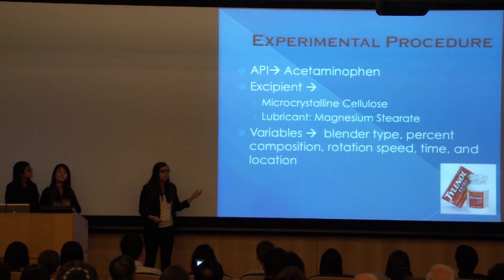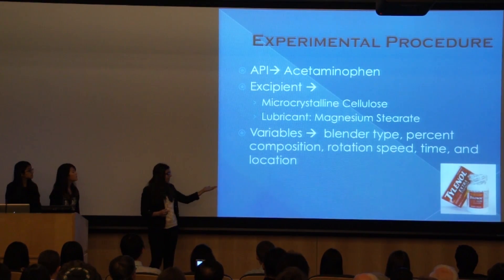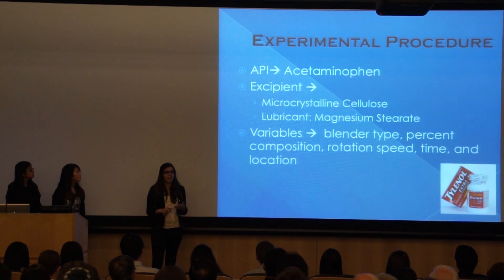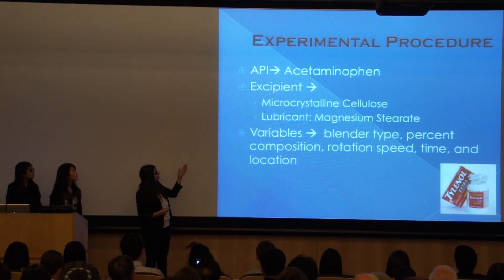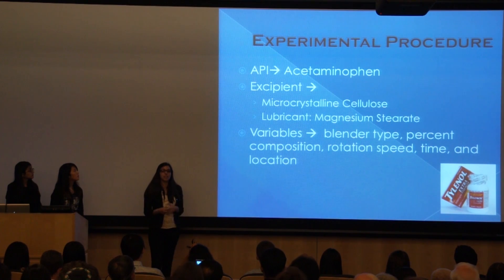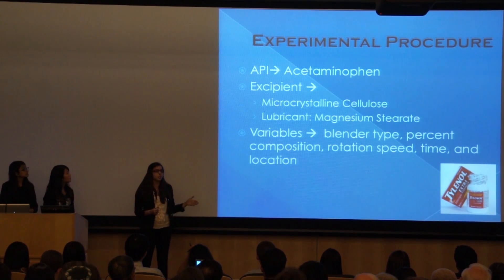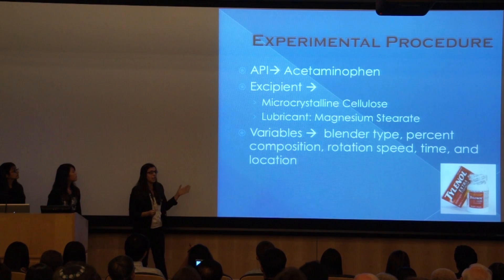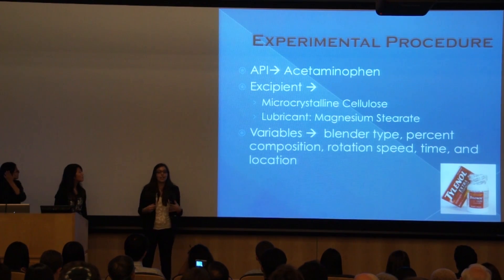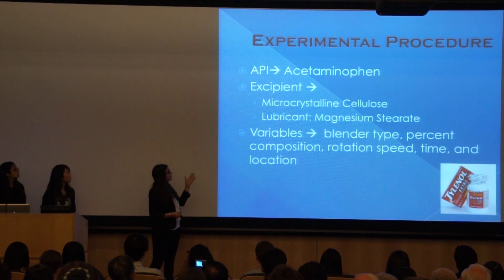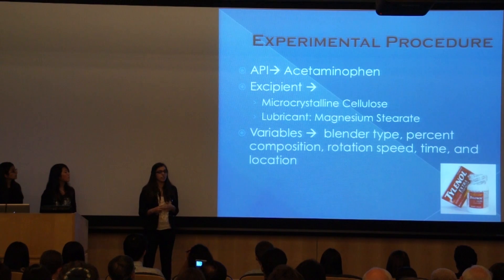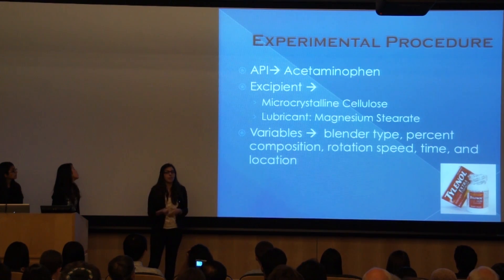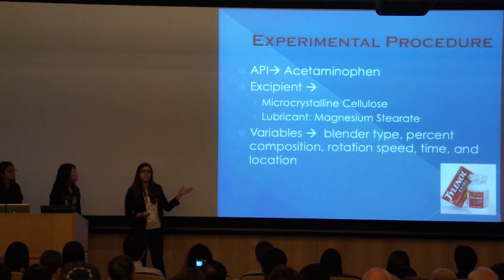In our experiment, we tried to optimize the making of Tylenol. There are two main components. There's the API, the active pharmaceutical ingredient, which is the therapeutic component that actually helps and heals you — in this case, acetaminophen. You also have the excipient, which is anything that's a filler in the drug. We used microcrystalline cellulose, which helps it get to the right location in the body. And then you have a lubricant, which in the manufacturing of the drug ensures it doesn't stick to any particles and goes through the manufacturing process smoothly — in our case, magnesium stearate.